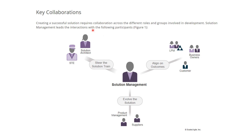They may also collaborate with the Solution Train Engineer and Solution Architect to steer the solution train. And they will be interacting with product management and suppliers to evolve the solution. So these are the three areas of collaboration — they work with different sets of stakeholders.